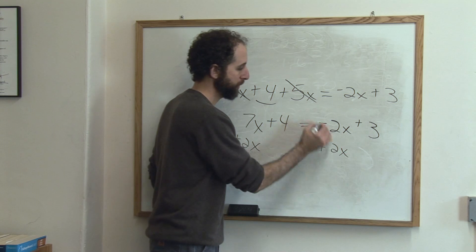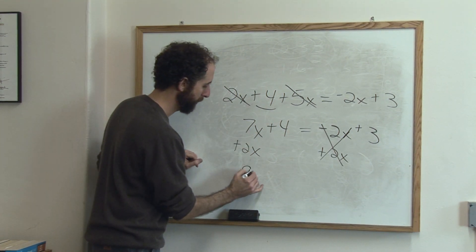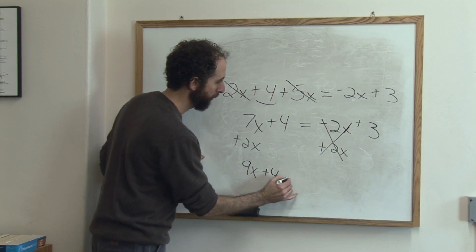How come? Because negative 2x plus 2x is zero. It cancels out. That's why we did it. 7x plus 2x is 9x plus 4 equals 3.